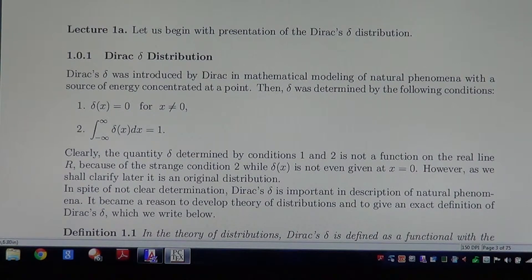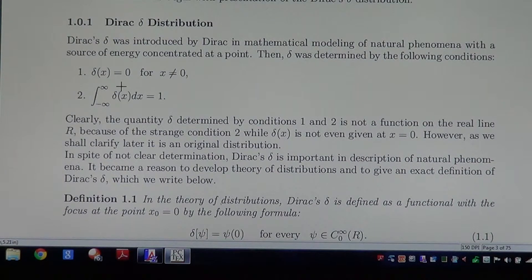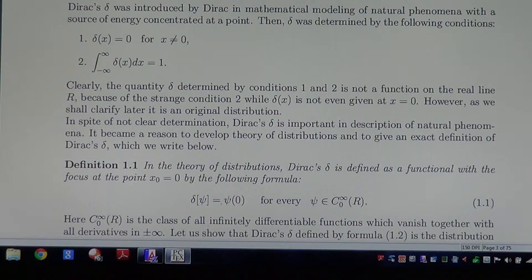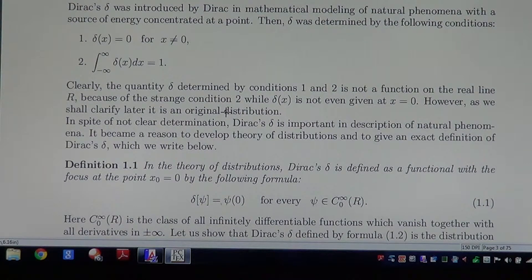Condition 1: Delta of X is 0 everywhere except the point X equals 0. Condition 2: The integral from minus to plus infinity of Delta of X equals 1. Clearly, the quantity Delta determined by conditions 1 and 2 is not a function on the real line R, because of the strange condition 2, while Delta is not even given at the point X equals 0.